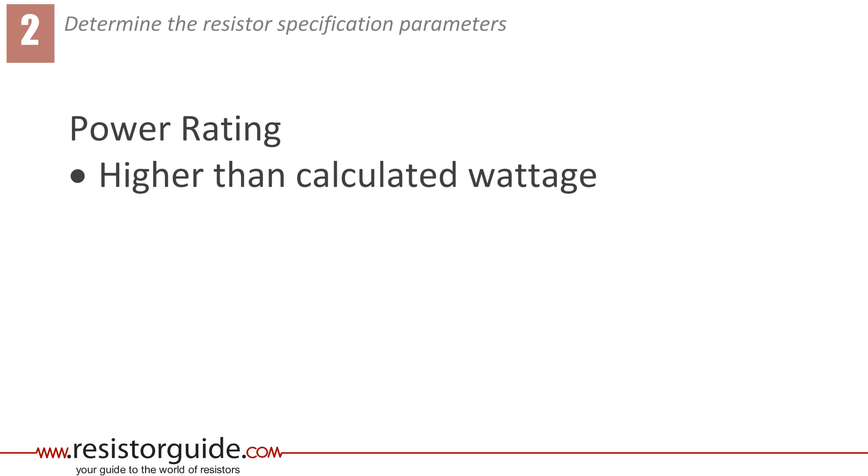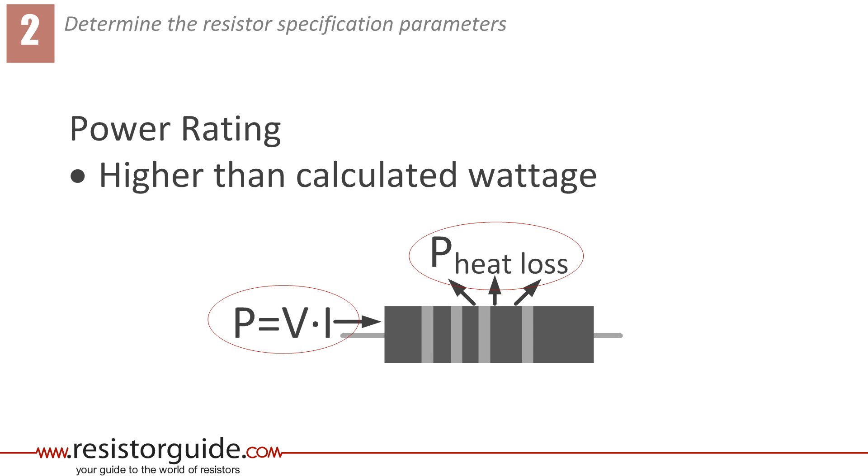It is a good practice to choose the power rating of a resistor much higher than the wattage as calculated in the first step. The temperature of the resistor stabilizes as the generated heat is equal to the heat the resistor can lose in the form of radiation, convection, and conduction. The larger the resistor surface area, the greater the heat loss rate, and therefore the lower the temperature rise.